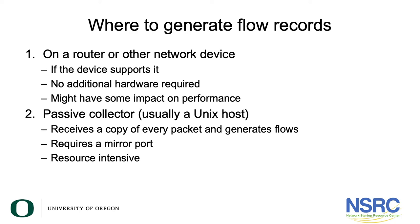Another place you could generate flow records is on a passive collector, which is usually a Unix host. Here we receive a copy of every packet and generate flows from it. This requires a mirror port on, for example, the campus Ethernet switch, where we make a copy of every packet and send it off to the passive collector. This can end up being very resource intensive.